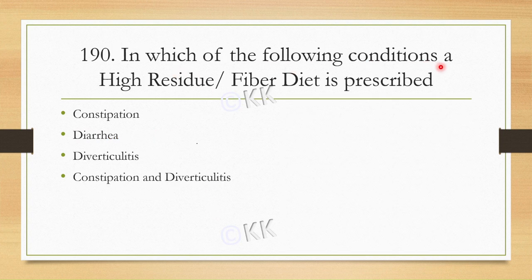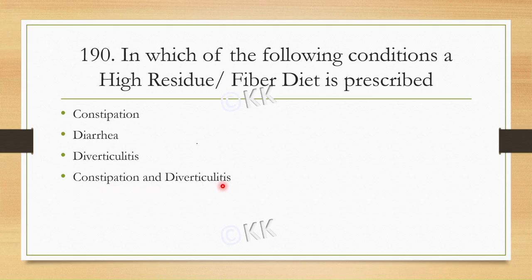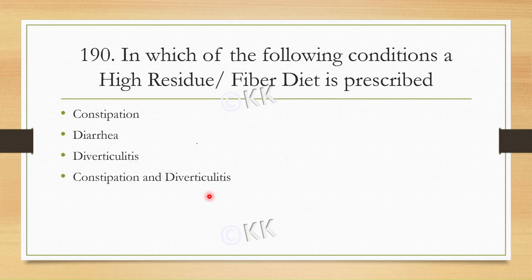In which of the following conditions is a high residue diet prescribed? Option A: Constipation. Option B: Diarrhea. Option C: Diverticulitis. Option D: Constipation and Diverticulitis. The correct option is Option D — Constipation and Diverticulitis.